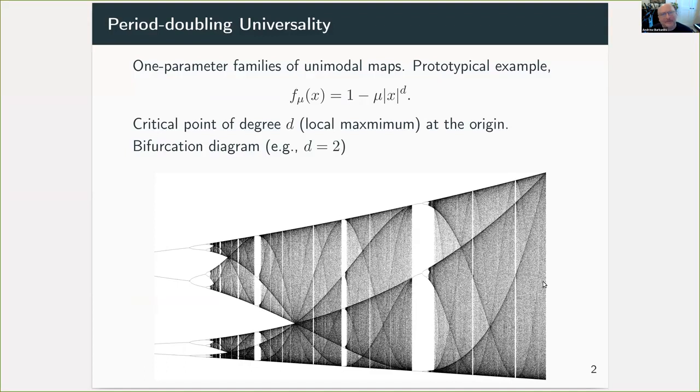The simplest example is one parameter families of unimodal maps with critical points of some fixed integer degree d at the origin. A prototypical example is shown, and the case d equals two is very well known indeed and results in this very beautiful bifurcation diagram that's been the subject of considerable study over many years.